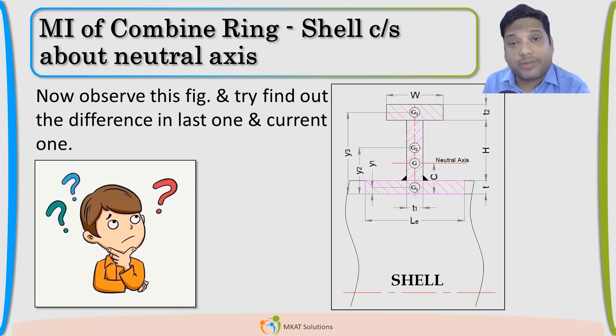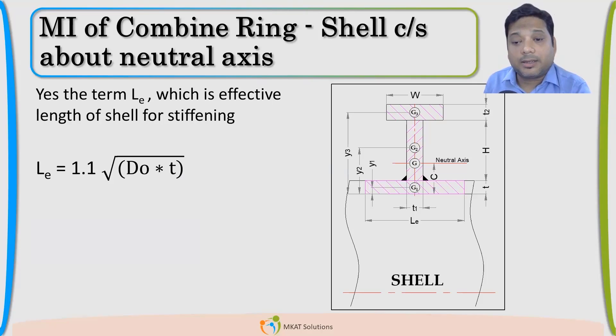If this is what we are considering, then I need moment of inertia of this complete I section. LE is 1.1 under root D0 into T. This is given by code. So, now we have LE. All the dimensions I have for this shape.